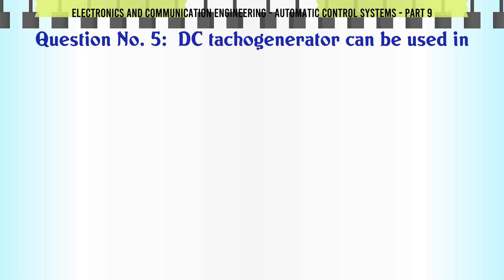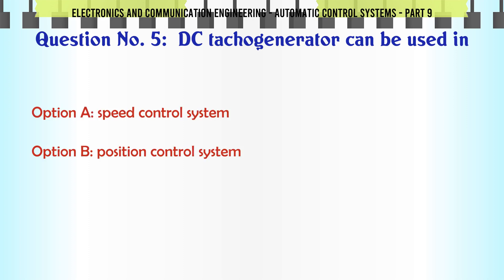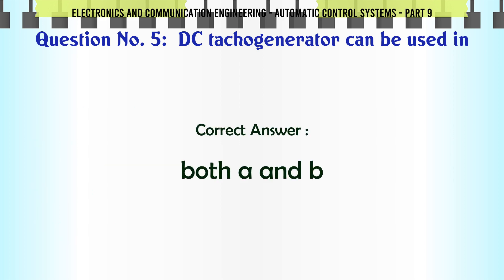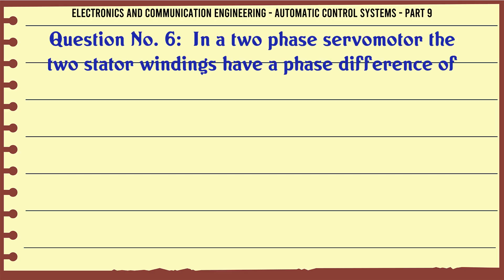DC tachogenerator can be used in: A. Speed control system, B. Position control system, C. Both A and B, D. Neither A nor B. The correct answer is: Both A and B.